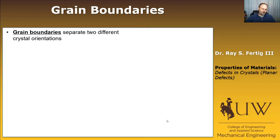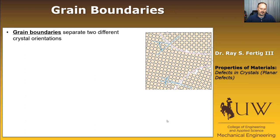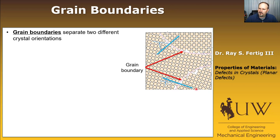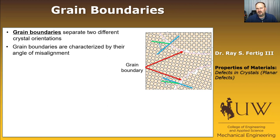Grain boundaries are boundaries that separate two different crystal orientations. Looking at this in 2D, you can see a line of atoms that clearly doesn't continue past the boundary — that lattice or crystal structure does not proceed past that boundary. The atoms on the boundary aren't optimally bonded, so it's also a higher energy state. Grain boundaries are typically characterized by their angle of misalignment.